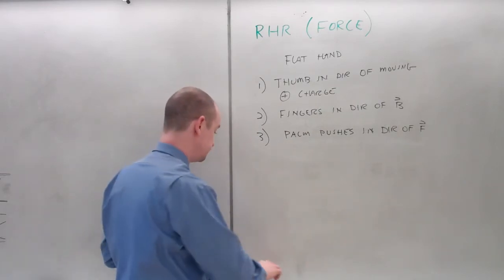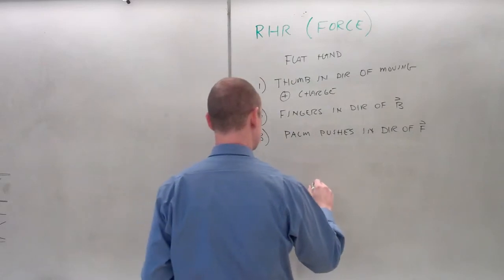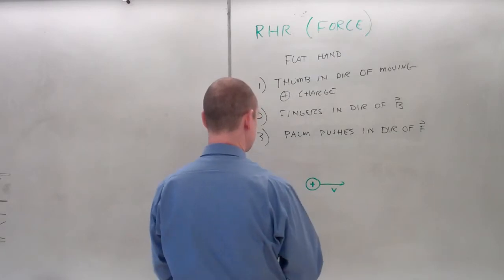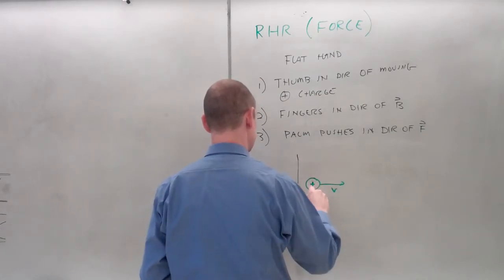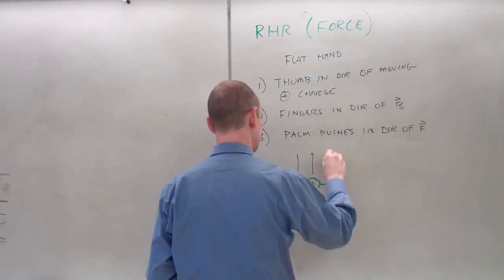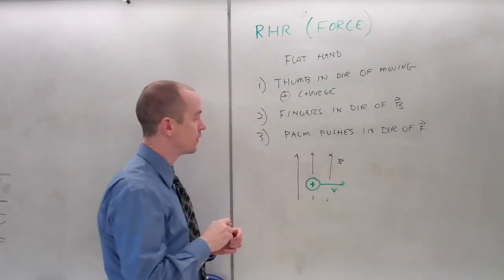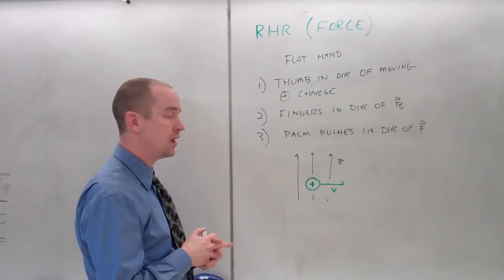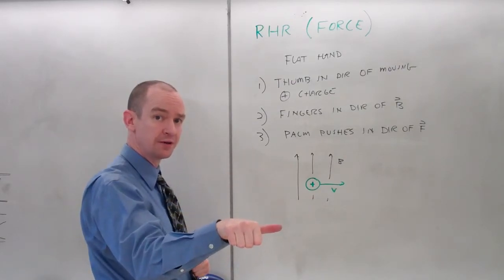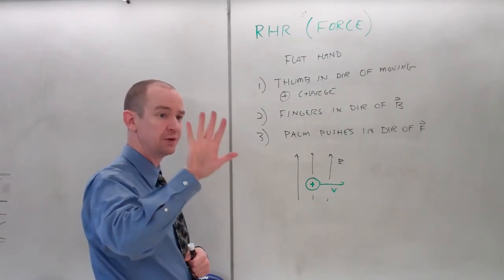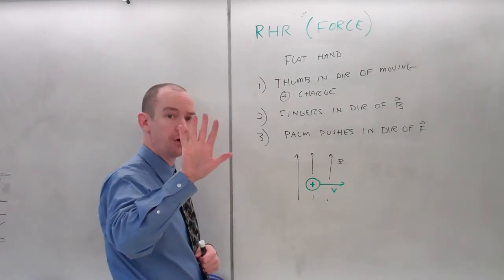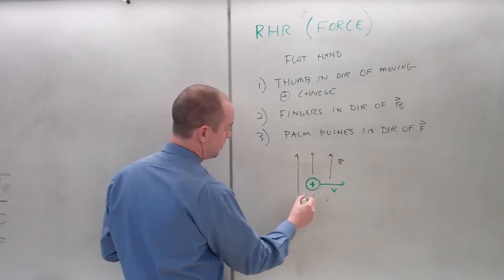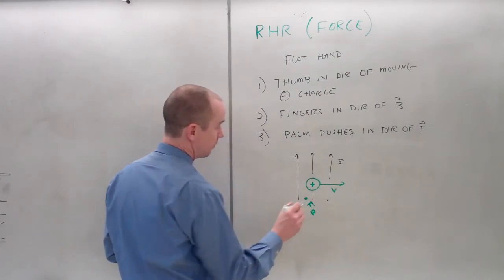Let's try an example. What's the direction of the force on this particle? Thumb in the direction of moving positive charge. Fingers in the direction of B. Palm pushes. This force must be out of the board.